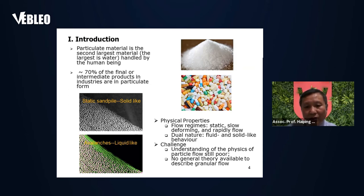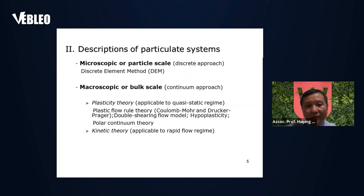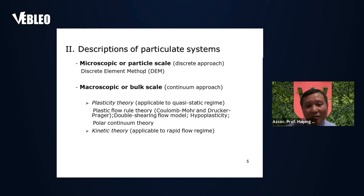Understanding of the physics of particle systems is still poor compared with water, other liquids, and solids. There is no general theory available to describe granular flow. There are two types of description for a particulate system: one is at the particle scale — a particulate system actually consists of individual particles — so we can consider the system at the particle scale. The discrete element method is the most popular method for study at the particle scale.